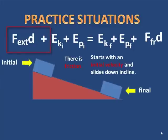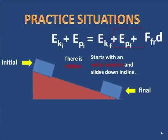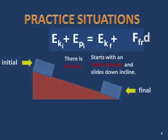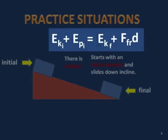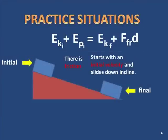Let's look at this. There isn't any external work being done, so we don't need that. There's definitely an initial kinetic energy and potential. There's friction, so there's work against friction. The kinetic energy is increasing, so there's a final kinetic energy. But the final potential energy is zero, so that is not needed in this equation. The total energy — kinetic plus potential — equals final kinetic plus work done against friction.